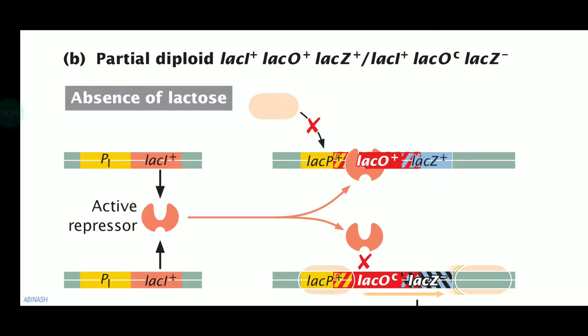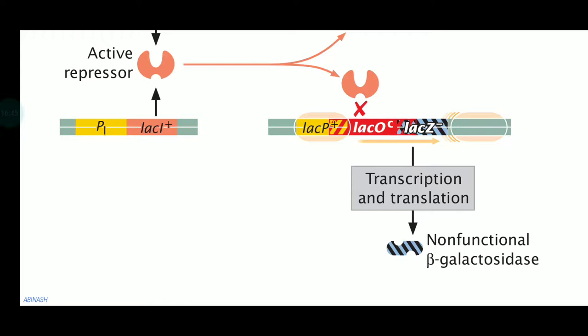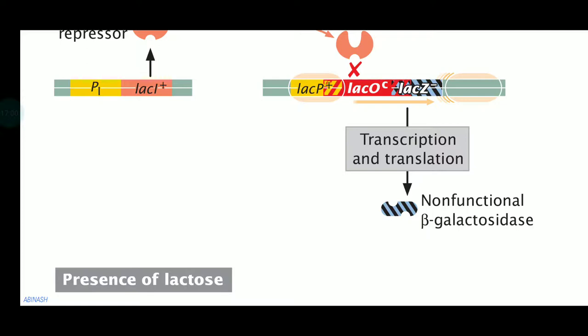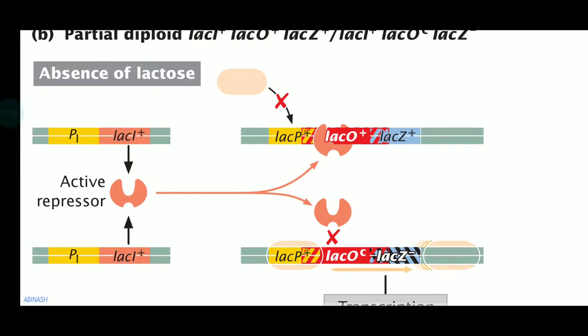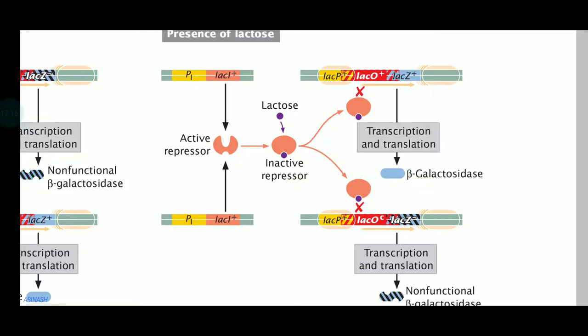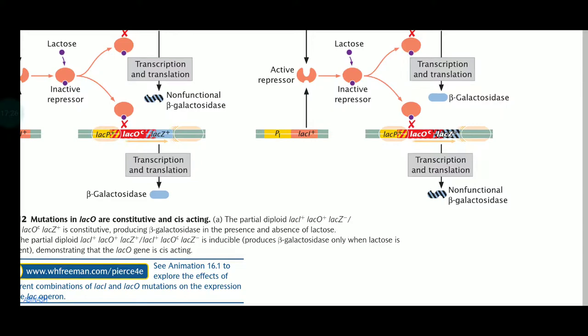Because we have lac Oc, the repressor cannot bind to its surface, so the RNA polymerase will keep moving from the promoter toward the structural gene, continuously producing transcription and the related enzymes. However, since we have lac Z minus — the mutated version — we will have a non-functional beta-galactosidase from the plasmid. In the absence of lactose we will have defective beta-galactosidase, but in the presence of lactose we will get functional beta-galactosidase from the bacterial chromosome.